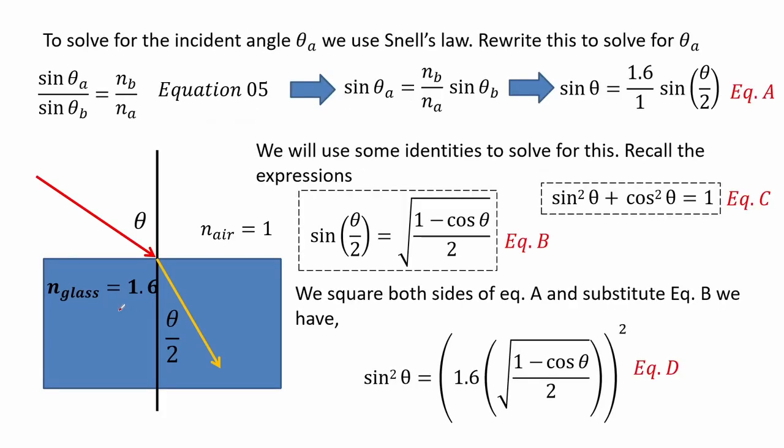To solve for the incident angle theta A we use Snell's law and rewrite it to solve for theta A. This is shown in equation A. We will have to use some identities we learned in mathematics shown in equation B and C.